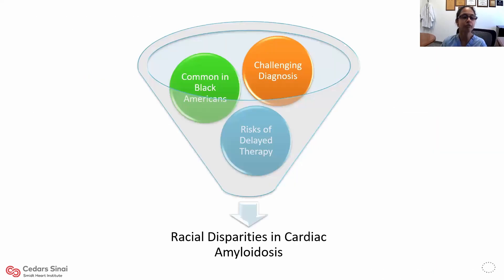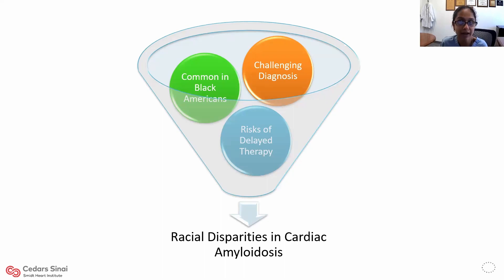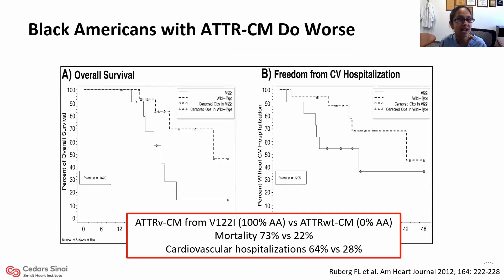When we think about racial disparities in cardiac amyloidosis, we have a perfect storm: it's common in Black Americans, the diagnosis is challenging, and there are risks of delayed therapy. These disparities are not just theoretical — they have been observed in practice. Black Americans with ATTR cardiac amyloidosis do worse. One study comparing those with the variant form V122I — 100% of whom were African-American — versus wild type, none of whom were African-American, showed strikingly higher mortality and greater risk of cardiovascular hospitalization in the variant group.